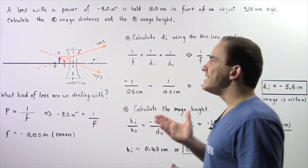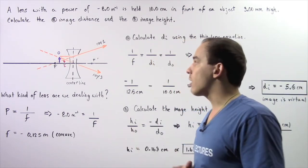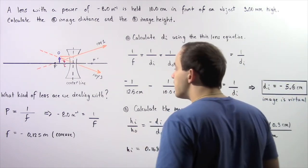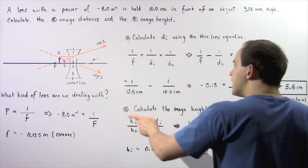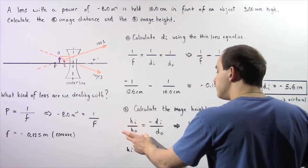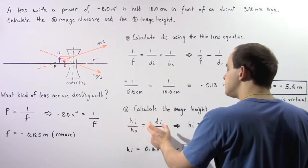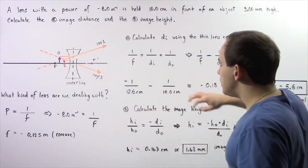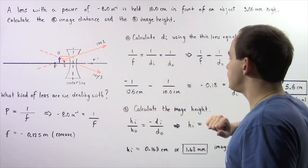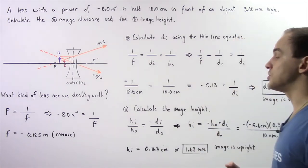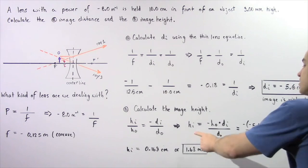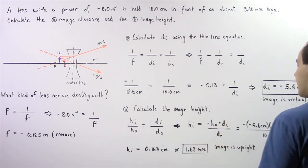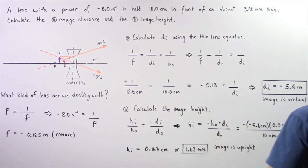Let's move on to part B, where we want to calculate the height of our image. We use the magnification equation: the ratio of the image height to the object height equals negative of the image distance divided by the object distance. We know the object height, the image distance from part A, and the object distance. So the image height HI equals negative of the product of the object height and image distance, divided by the object distance.